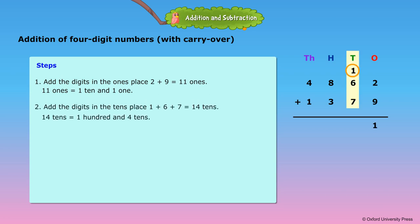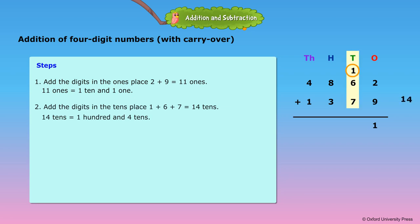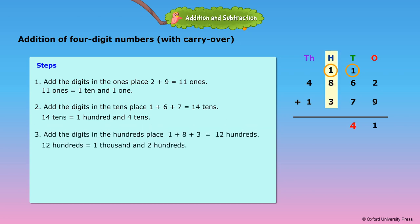Step 2: Add the digits in the 10's place. 1 plus 6 plus 7 is equal to 14 tens. 14 tens equals 1 hundred and 4 tens. Put 4 tens under the 10's column and carry over 1 hundred to the 100's column.